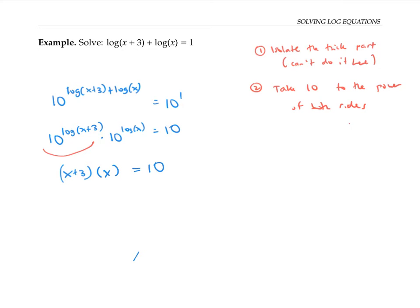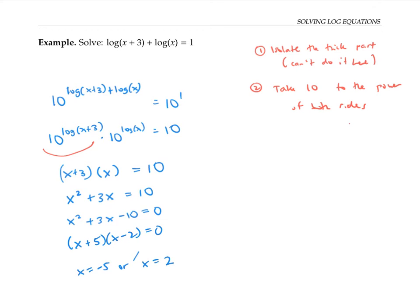Now I have an equation I can deal with — it's a quadratic. So I'm going to first multiply out to make it look more like a quadratic, get everything to one side so it's equal to zero. And now I can either factor or use the quadratic formula. I think this one factors: it looks like x plus five times x minus two. So I'm going to get x is negative five or x is two. That was the third step — finish solving for x.